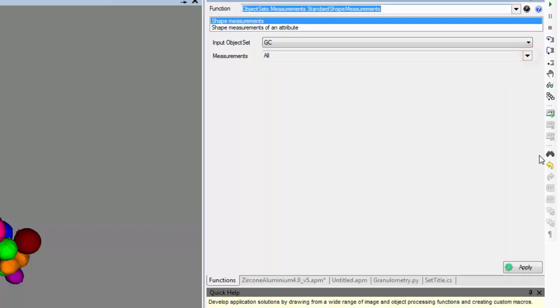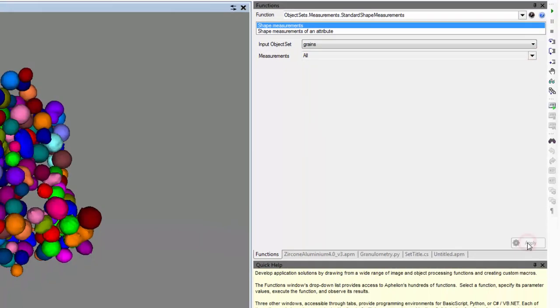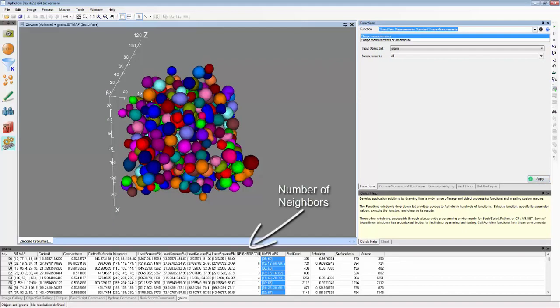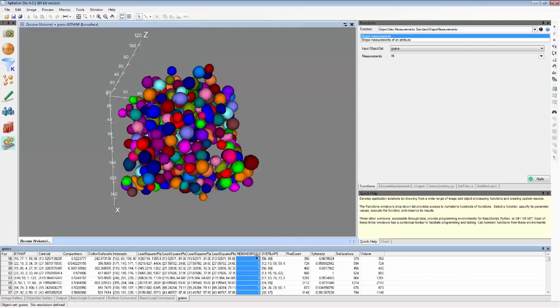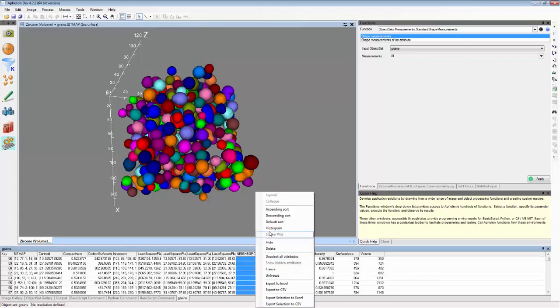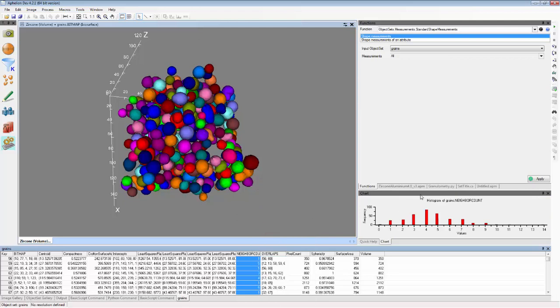These results can then be displayed as a histogram for a property of interest such as the number of nearest neighbors by selecting that property in the grid view and then selecting histogram.